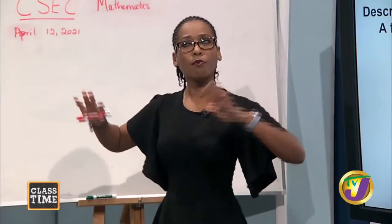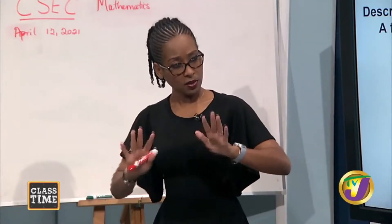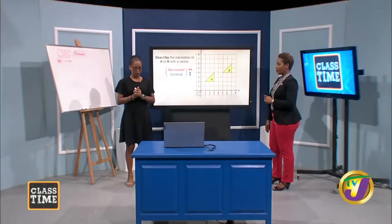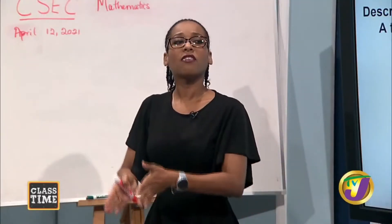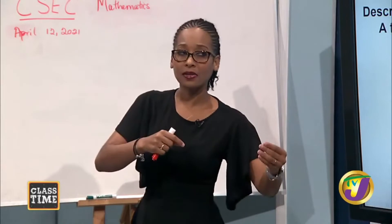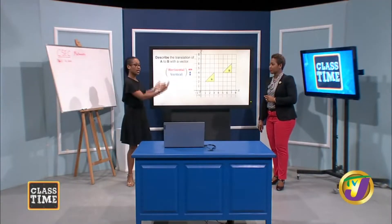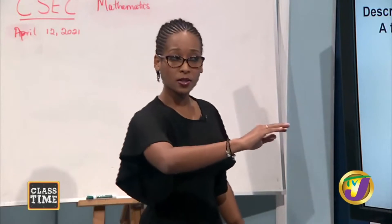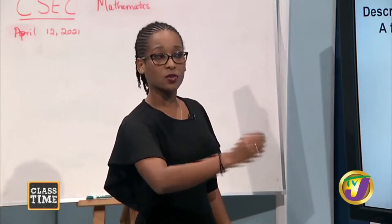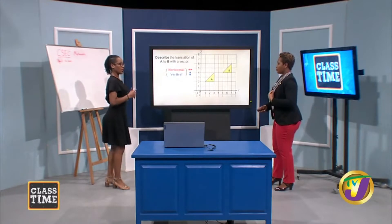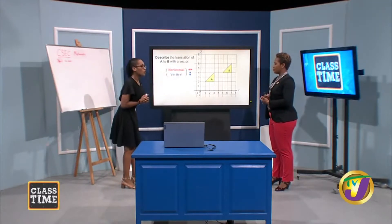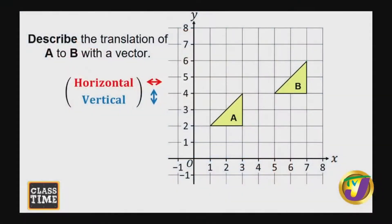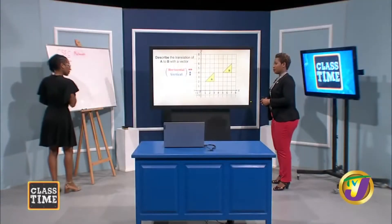To recap: our translation vector gives us a horizontal movement parallel to the x-axis — whether left or right — and a vertical movement parallel to the y-axis — whether upwards or downwards. Instead of just sliding and counting units, I want to see if we can look at a relationship. We started with our object, or pre-image. Did we do anything to our object to arrive at our image? Yes — we applied the information given in our translation vector.